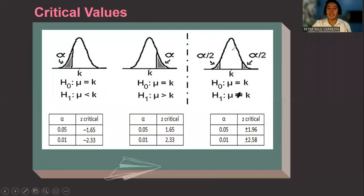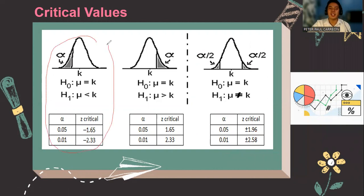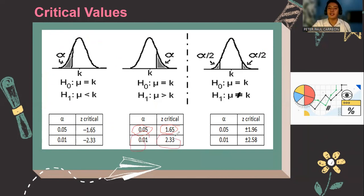For a two-tailed test, critical values are positive and negative 1.96 for a 95% confidence level, and positive and negative 2.58 for a 99% confidence level. However, the critical values change for a one-tailed test. For a left-tailed test, the critical values are negative 1.65 and negative 2.33 for a 95% and 99% significance level respectively. For a right-tailed test with alpha 0.05, the critical value is 1.65, and for 99%, it is 2.33.